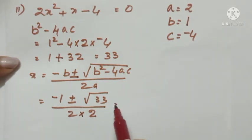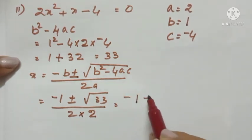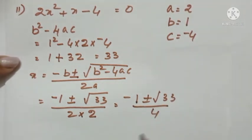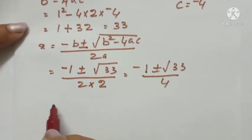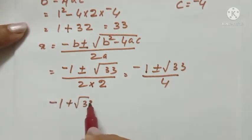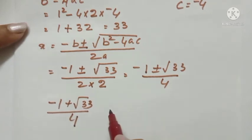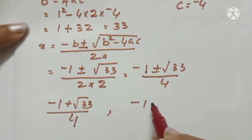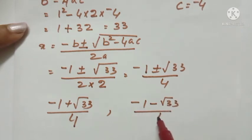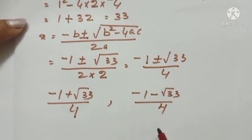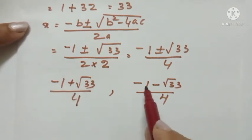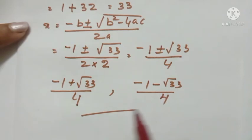So x = (-1 ± √33) / 4. Therefore the roots of the equation are (-1 + √33) / 4 and (-1 - √33) / 4.